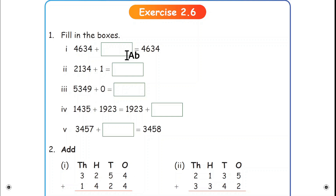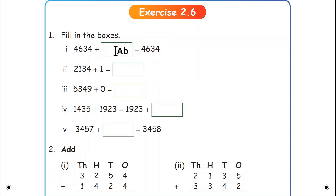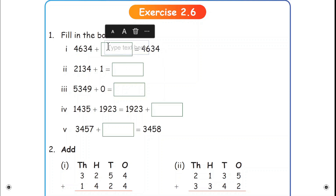First one: fill in the boxes. 4634 plus box is equal to 4634. Look at the left hand side — the same number will come on the right hand side. If we add 0 to any number, we can get the same number. So what is the answer? 0.